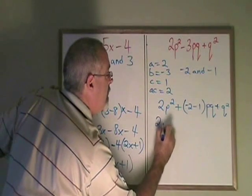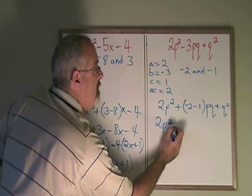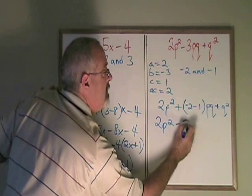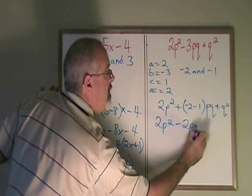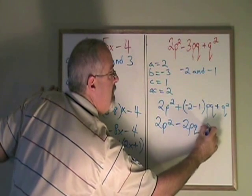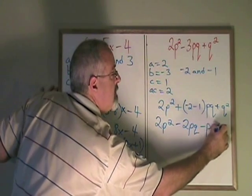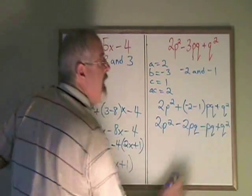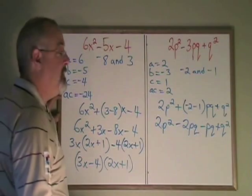Rewriting this, I get 2p squared minus 2pq minus pq plus q squared. And now I'm ready to do the grouping phase of my method.